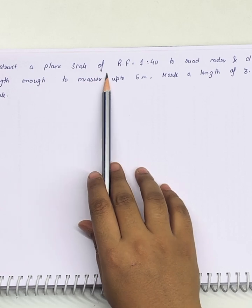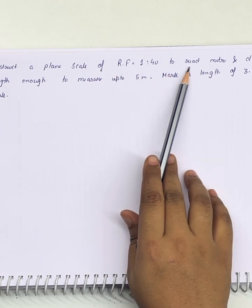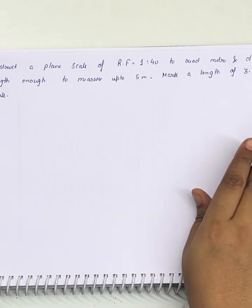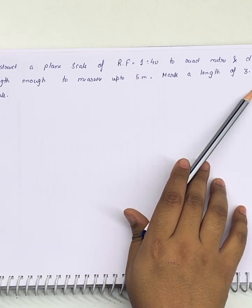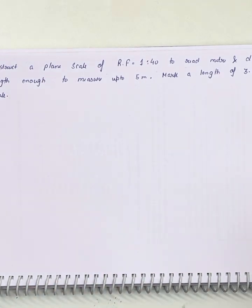We need to construct a plane scale of RF 1 is to 40 to read meters and decimeters. The length should be enough to measure up to 5 meters. We'll mark a length of 3.4 meters on the scale.